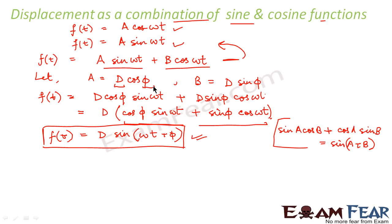So, now our aim is to express D in terms of A and B and also φ in terms of A and B. So, let us say this is equation number 1. This is equation number 2.